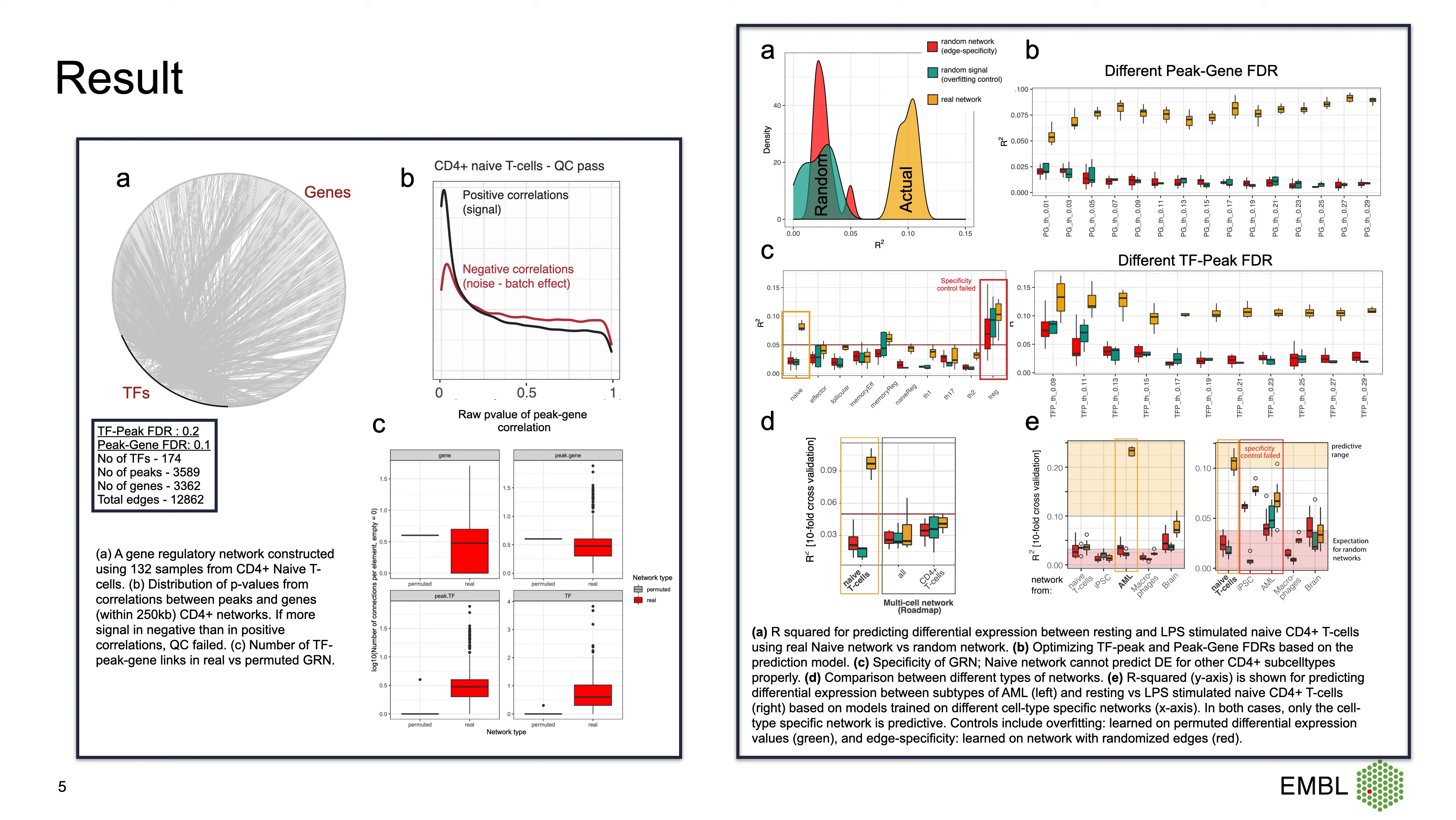In part B, we optimized TF-peak and peak-gene FDR thresholds, which are some of the GRN construction parameters, based on their prediction performance.